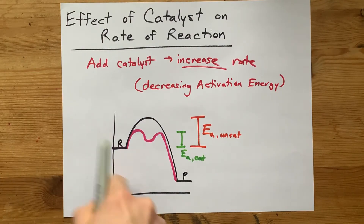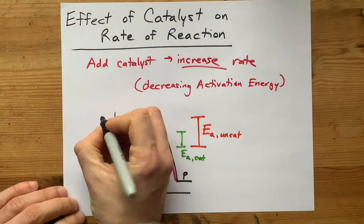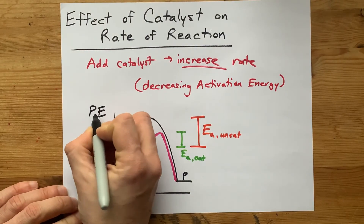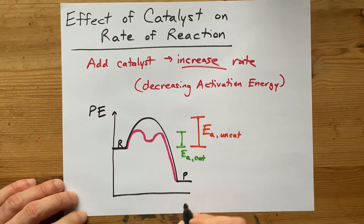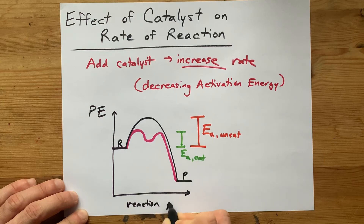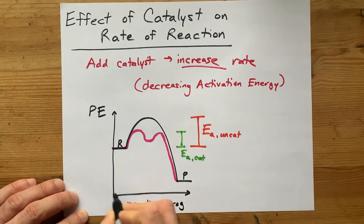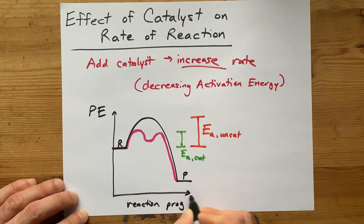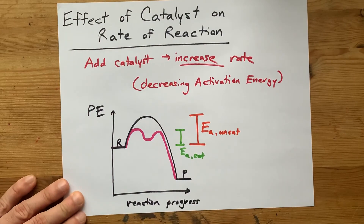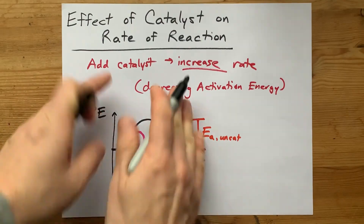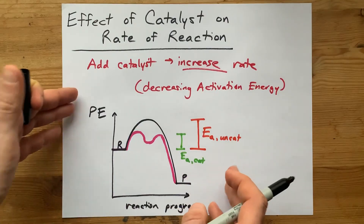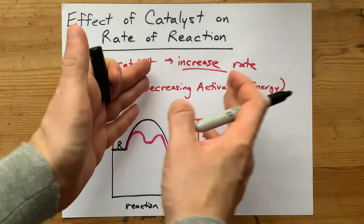Lastly, I'm going to label my axes because your teacher probably wants that too. Some teachers will show this as potential energy on the y-axis, and then this is generally the reaction coordinate — where you're starting with the reaction hasn't started here, and then this is where you finish. You can also label it reaction progress. When you add a catalyst, you decrease the activation energy of the overall reaction, and therefore the reaction goes faster — you've increased the rate.